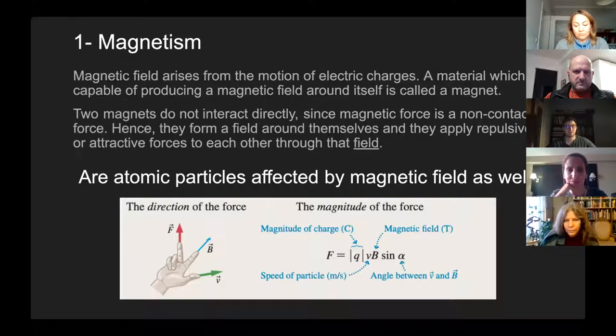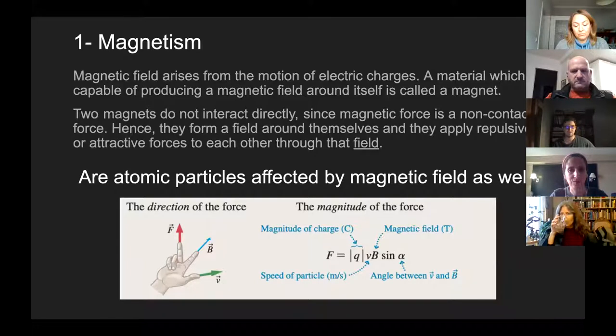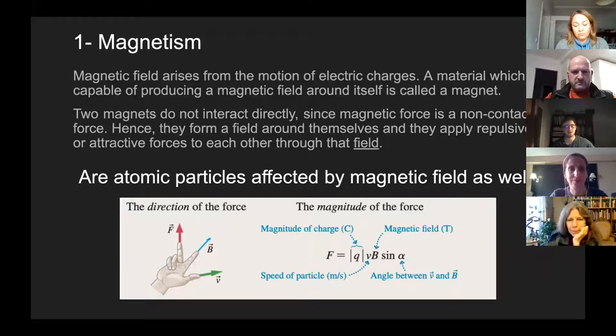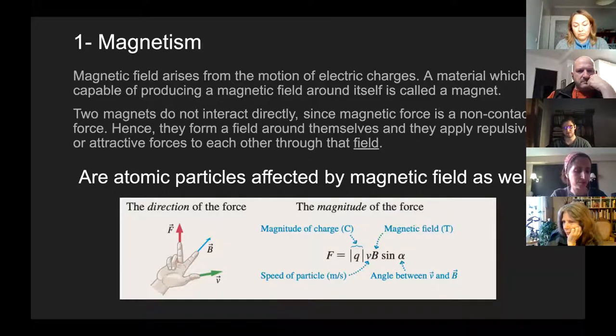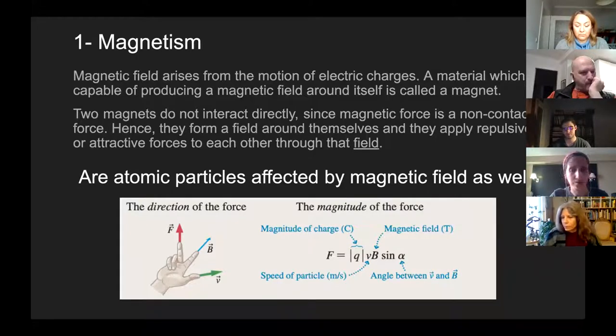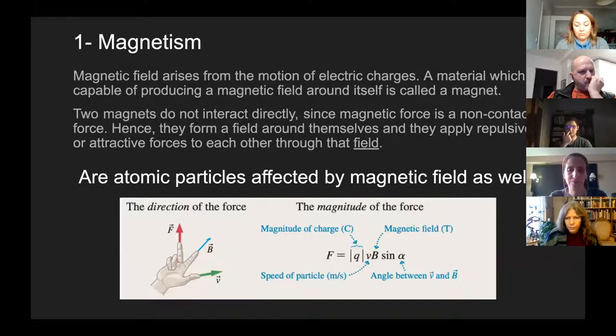Now, as you know, magnets interact with each other. They repel or attract each other. However, they do this without the contact. So this is actually why magnetic force is called an un-contact force. And so how do they apply force one another? Well, there is actually an agent, which is the magnetic field. So they apply this force through the magnetic field. And as you know, if an atomic particle enters a magnetic field, then the force will be exerted on it. But the key here is that the particle has to be moving.